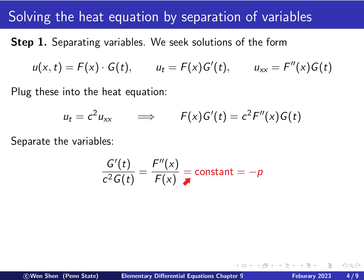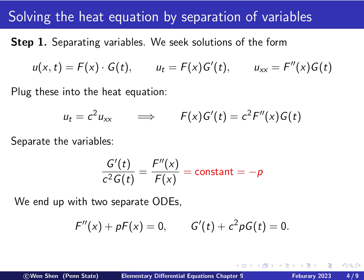We observe that both sides must equal a constant. We call it negative p — you can call it p and eventually conclude it must be negative, so let's write it as negative p here. This gives us two separate ODEs: for f, f double prime plus pf equals zero; and for g, g prime plus c squared p g equals zero. So f satisfies a second-order linear ODE and g satisfies a first-order ODE.